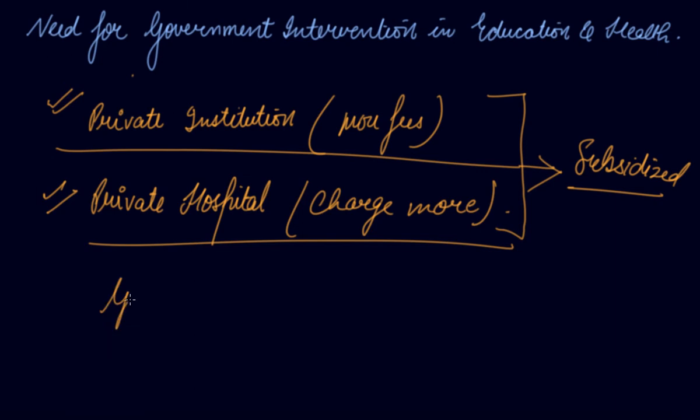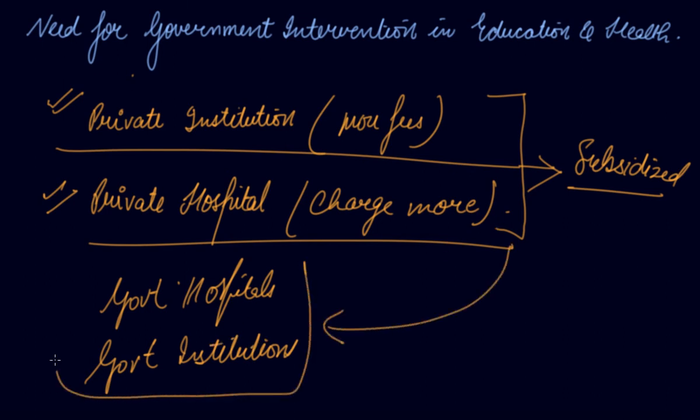Government open their government hospitals and the government colleges or institutions for the education. What government do? Government give the education at a very subsidized rate so that the health and education facility is available to all the citizens of the country or all the poor people of the country or the middle people of the country, those who cannot afford the high price education as well as health. This was all about education.